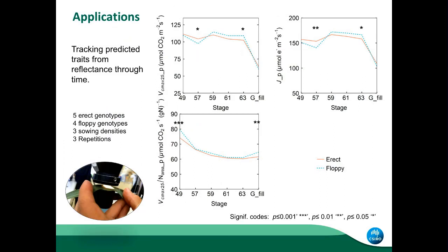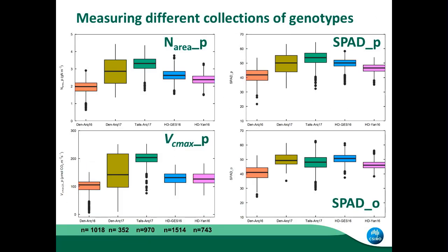After that, we've been applying these measurements, and it's amazing because now we are able to measure through a growth stage. This is another experiment where we measured some genotypes with floppy and erect canopies in the field, and we were able to track the traits through time and see at which point of phenology we can find more differences. We did that for all the traits — that's one example of the application. Another example is a spread of nitrogen and Vcmax from a different collection, including some populations and recombinant inbred lines we are working on too. There is spread and diversity.